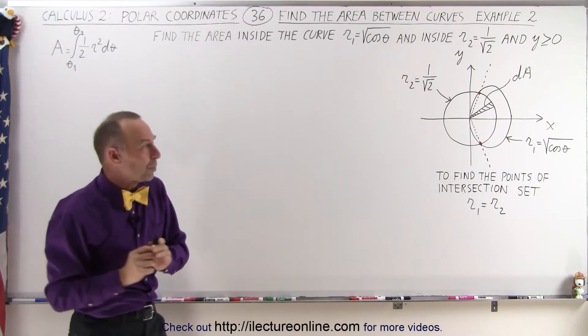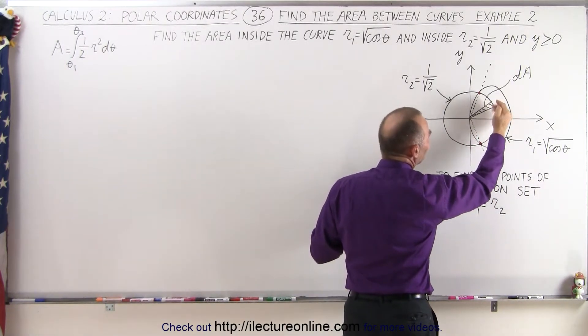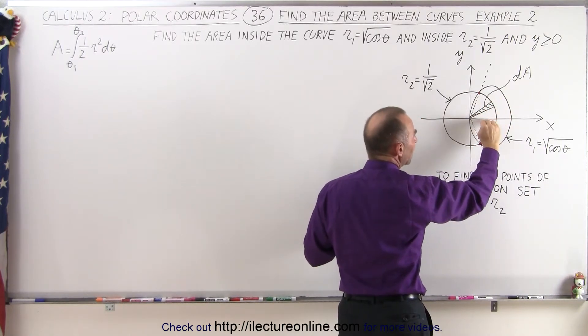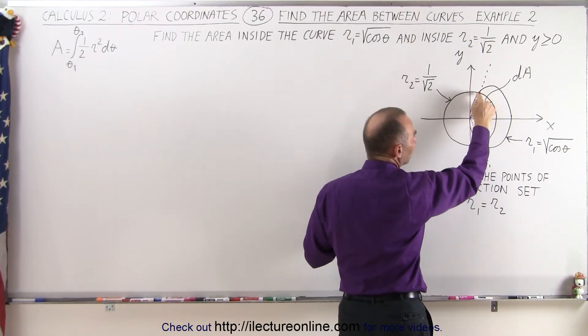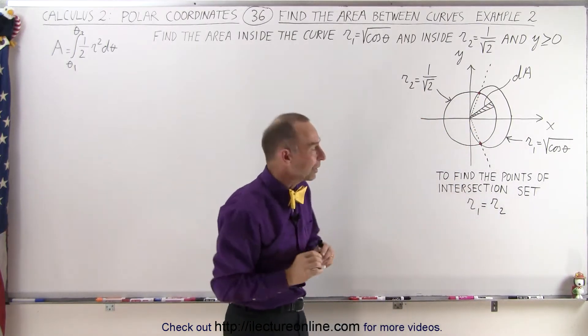Now the reason why this is a little bit different than the previous example is that if we take a look at this area element here and we integrate it from the x-axis where theta equals 0 to the line here where the two functions meet, there's still a small little section here that we haven't integrated yet. So you have to be careful with those, you have to look for those.